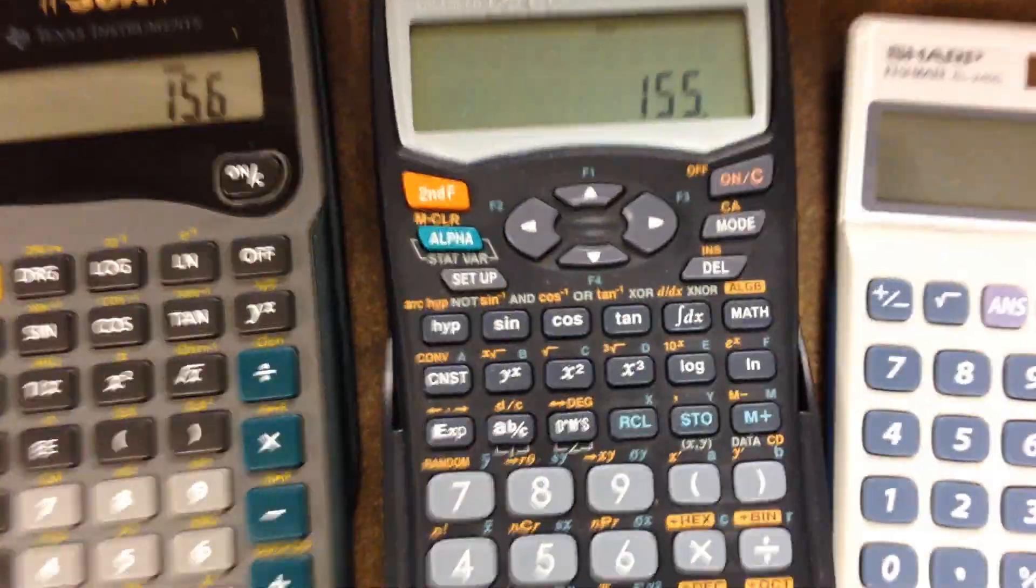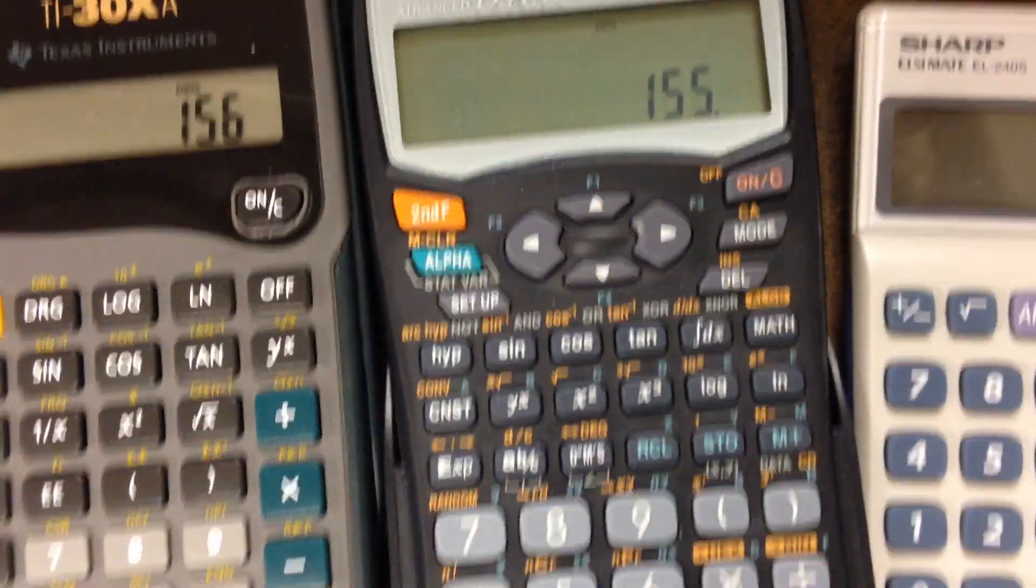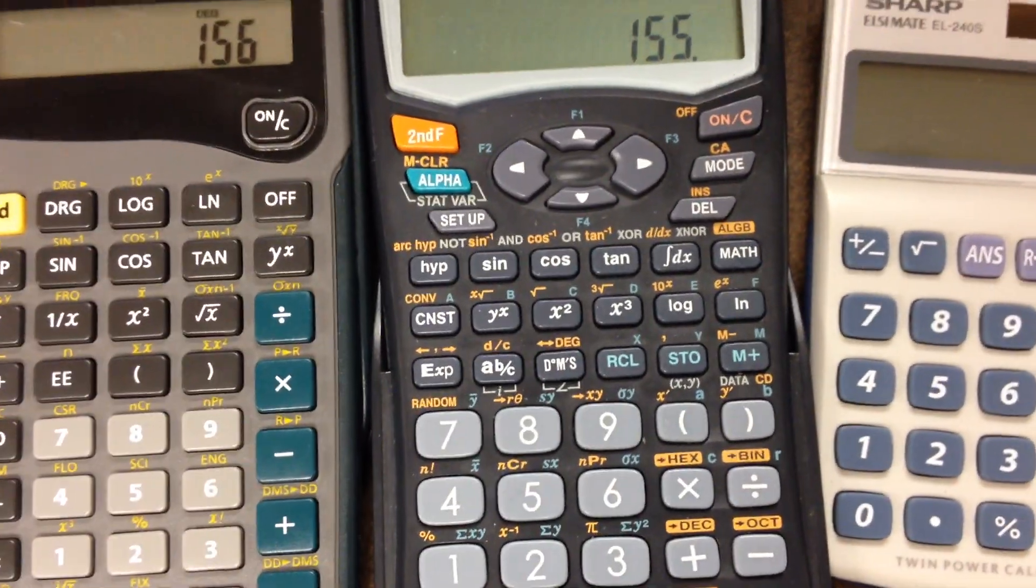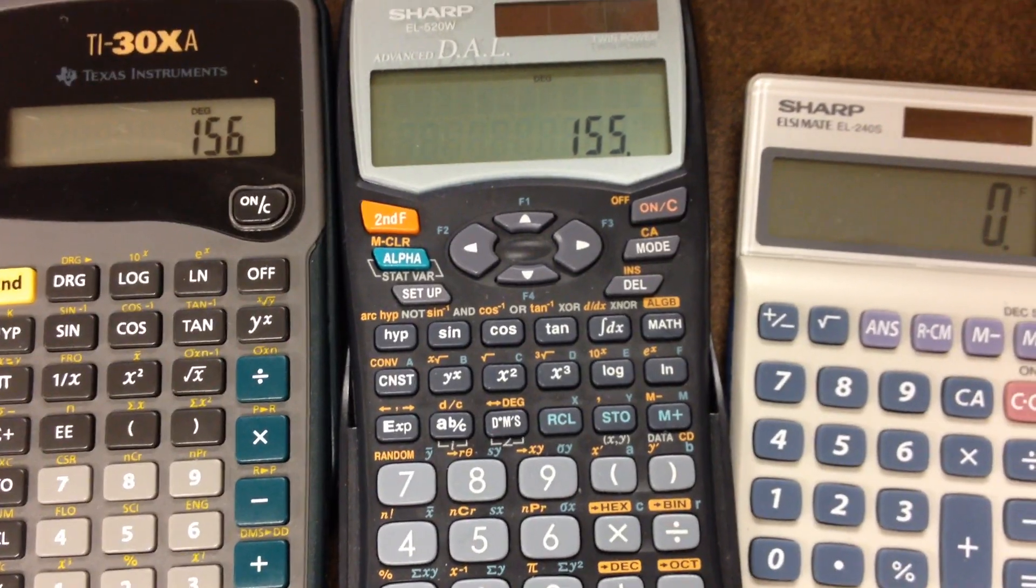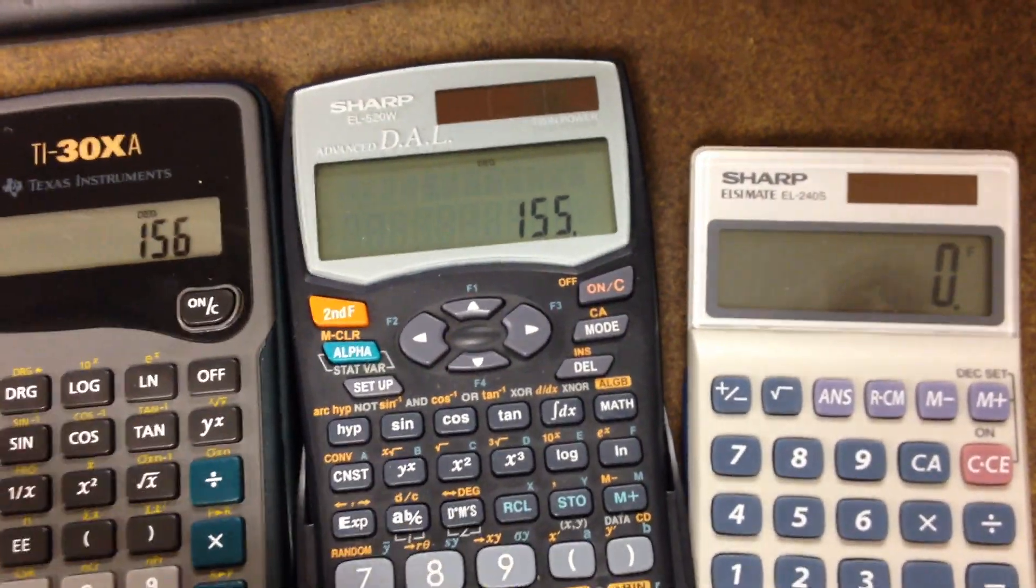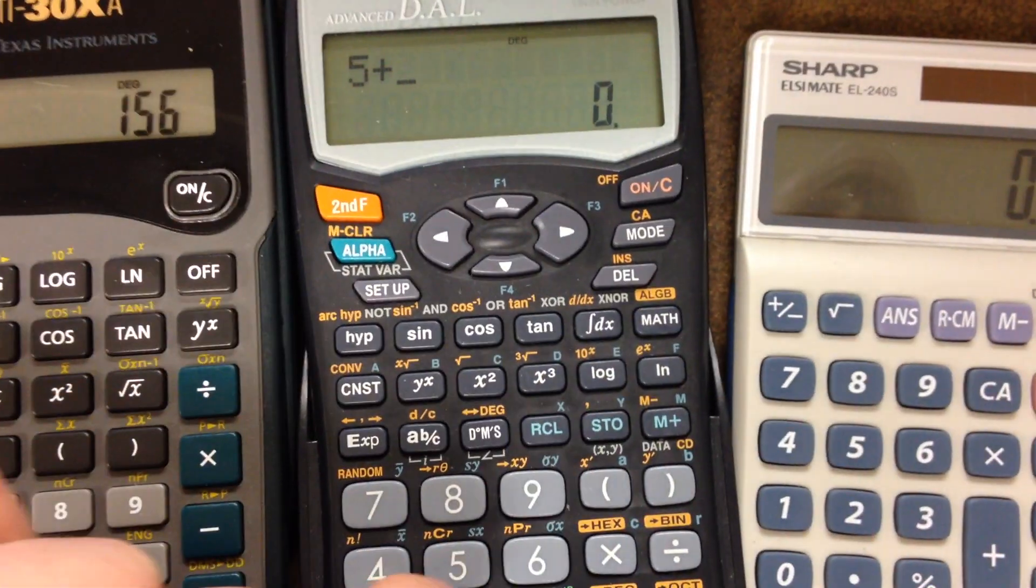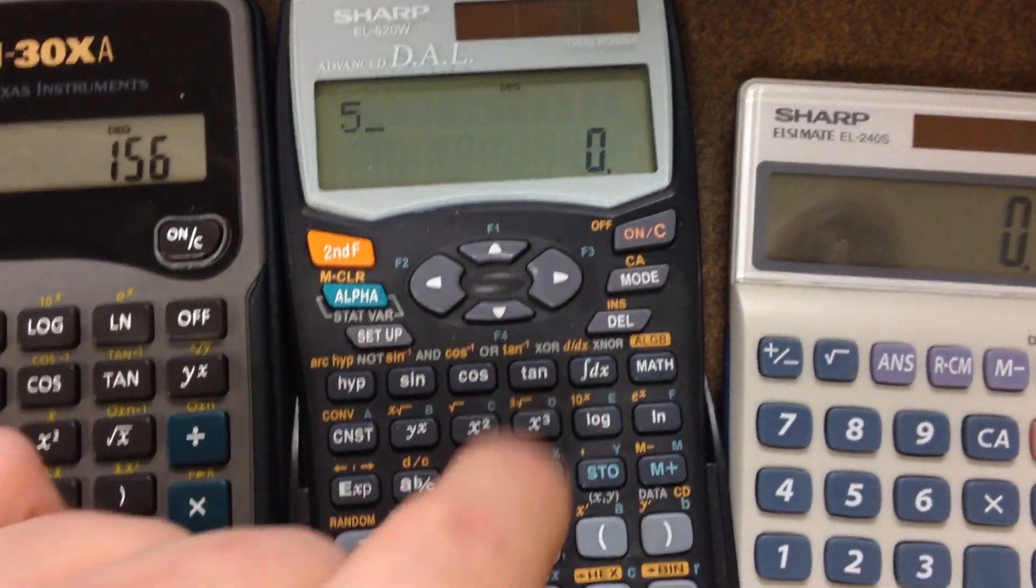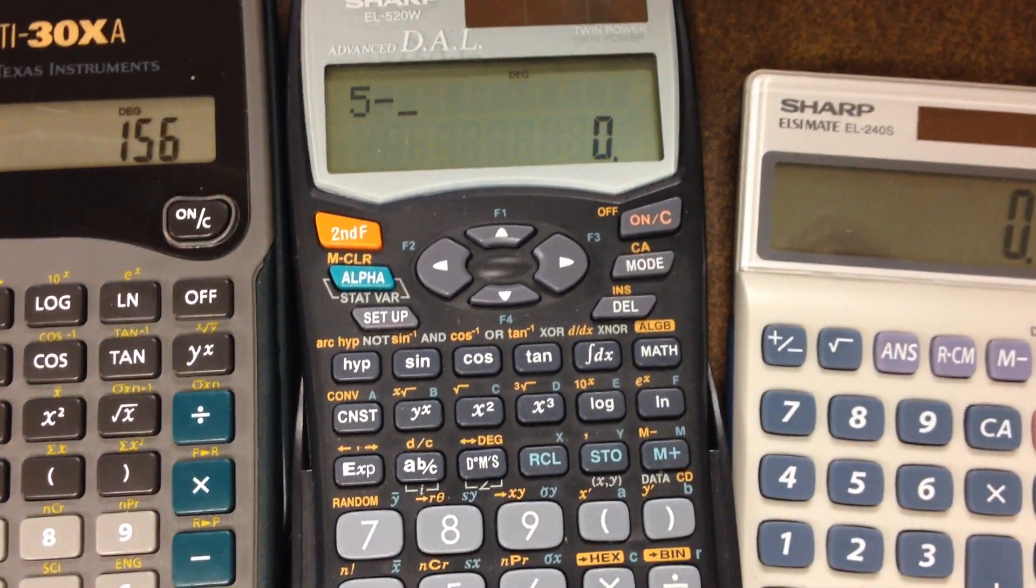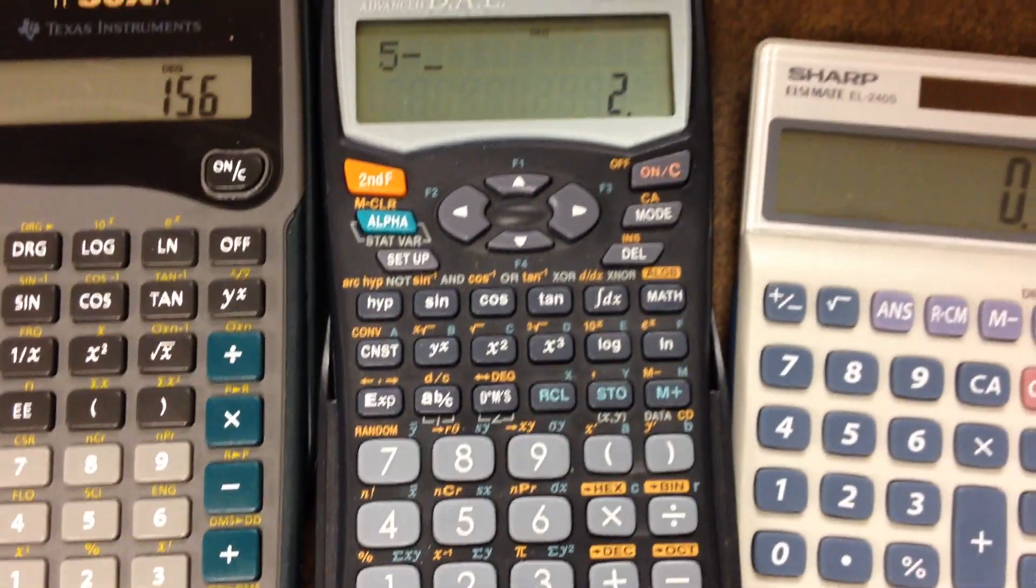So those are some of the options for editing and fixing minor mistakes that you make when you're entering numbers and symbols in your calculator. So 5 plus, oh, I didn't want to add, I want to subtract. So this one gets rid of the last character, 5 minus 2. So that's how you can do these things, fairly straightforward. Thank you.